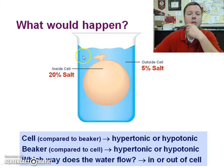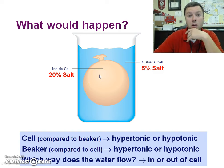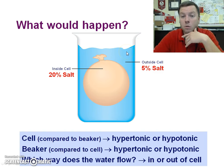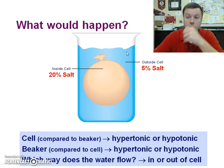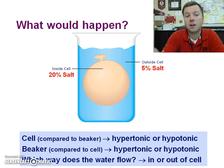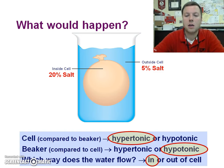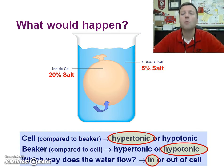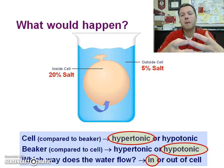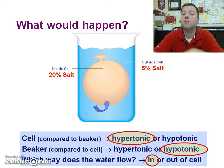So what's going to happen here? Inside the cell there's 20% salt, which means 80% water. Outside there's 5% salt, which means 95% water. So there's more water outside than inside — 95% out, only 80% in — so water should move into this cell. We're actually going to do a lab soon where we make our own cells and put them in different types of solution to see what diffuses through.